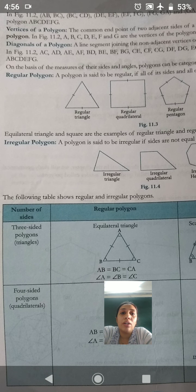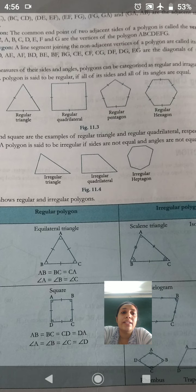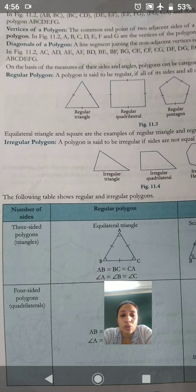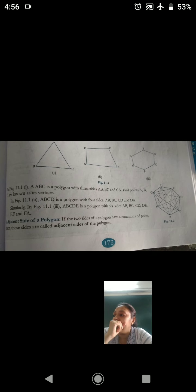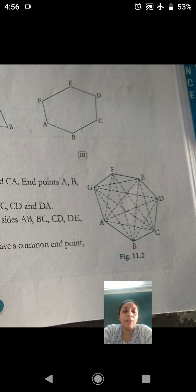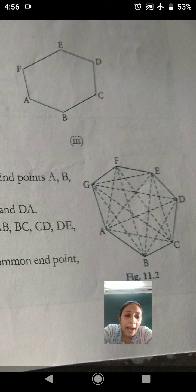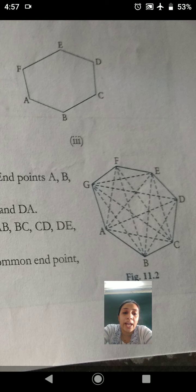Diagonals of a polygon. A line segment joining the non-adjacent vertices of a polygon are called its diagonals. That means, choose such points, first, second, which do not have a common end point. If you look at this figure 11.2, then in that A, E, A, F, A, G, all are joined together. So there is no common end point here. If you join any two points, that would be called the diagonal.